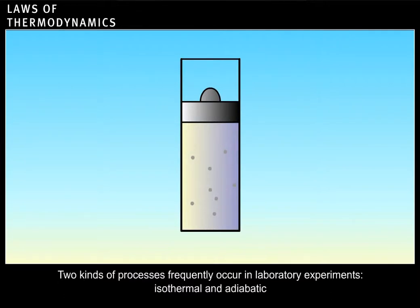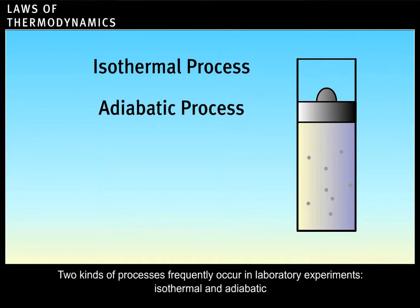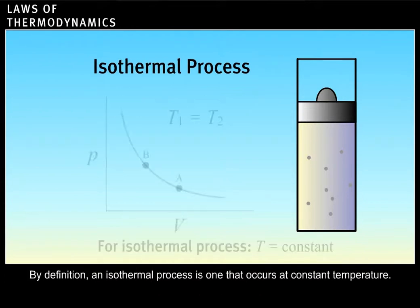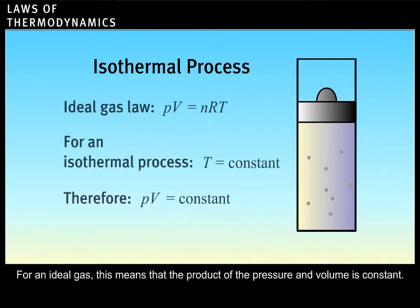Two kinds of processes frequently occur in laboratory experiments, isothermal and adiabatic. By definition, an isothermal process is one that occurs at constant temperature. For an ideal gas, this means that the product of the pressure and volume is constant.